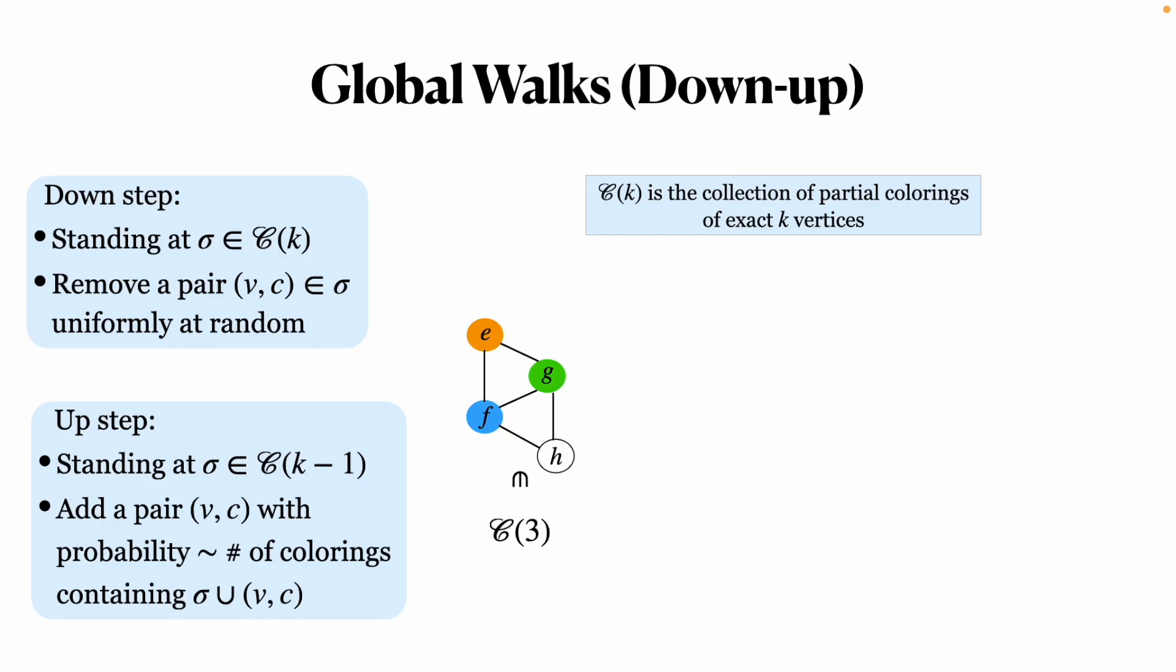First, we remove the color for example of E and walk into a coloring in C2. And then we pick the vertex H with pink and walk back to a coloring in C3. The down-up walk is exactly the Glauber dynamics when we apply it to Cn, the space of all proper colorings on the entire graph with n vertices.